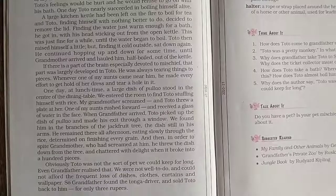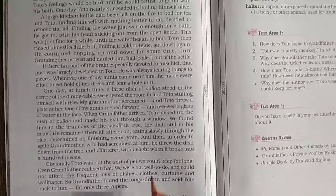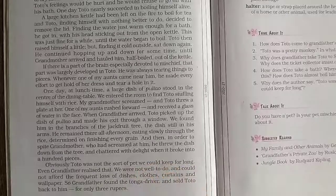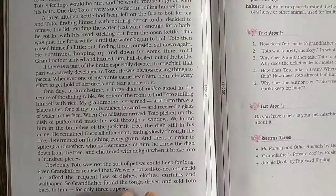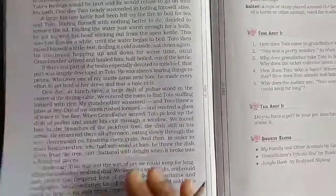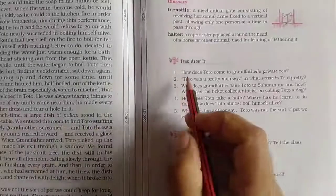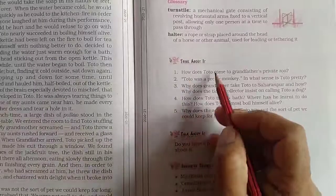Finally, grandfather found Toto's mischiefs too expensive, and he sold him back to the tanga driver for only three rupees. He bought Toto for five rupees but sold him for only three rupees because he was very mischievous in his behavior. So students, here we complete our lesson. Now let's start our question answers.